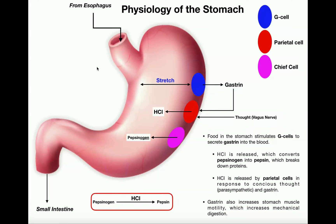In the previous video, we talked about the physiology of the stomach. When mechanical and chemical digestion of the stomach contents is complete, we have a substance called chyme. Chyme is going to contain carbohydrates and lipids, but remember the stomach's job is really to break down proteins, done in combination with hydrochloric acid and the activated enzyme pepsin. The stomach is then going to facilitate squirting of this chyme into the small intestine for further chemical digestion.